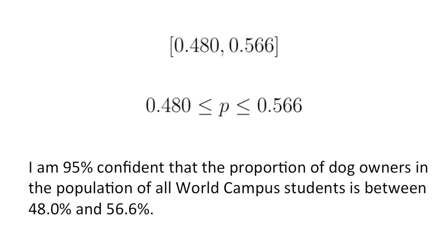These are two examples of how you may see this confidence interval written. I am 95% confident that the proportion of dog owners in the population of all World Campus students is between 48.0% and 56.6%.